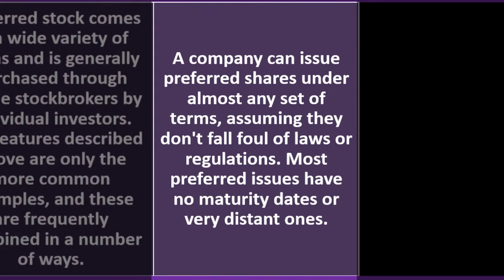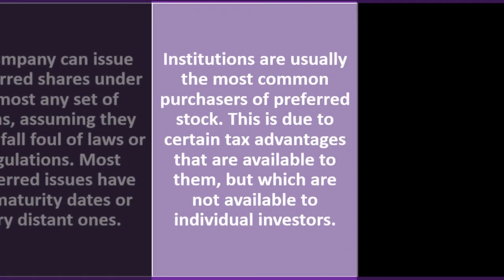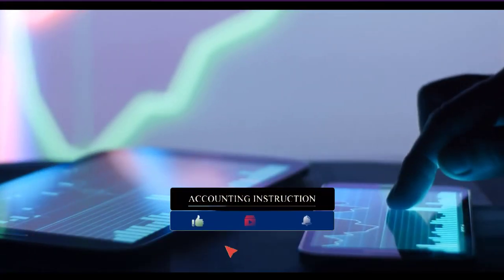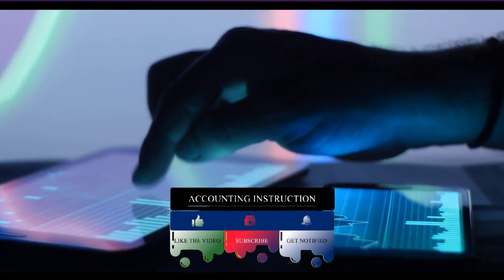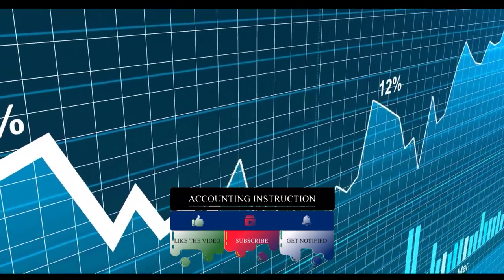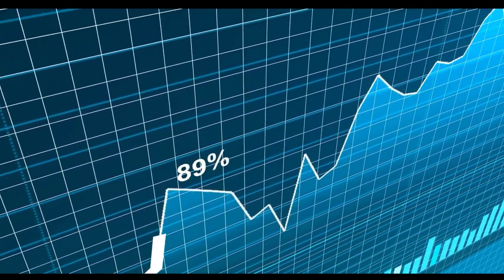Preferred stock comes in a wide variety of forms and is generally purchased through online stock brokers by individual investors. The features described are only the more common examples and are frequently combined. A company can issue preferred shares under almost any set of terms, assuming they don't fall foul of laws or regulations. Most preferred issues have no maturity dates or very distant ones. Institutions are usually the most common purchasers of preferred stock due to certain tax advantages available to them that are not available to individual investors.